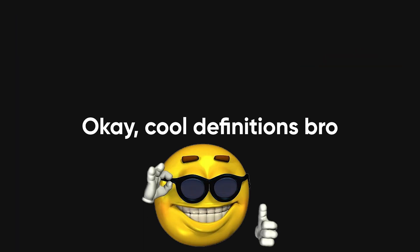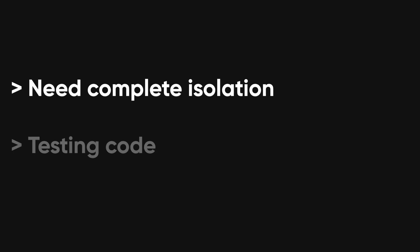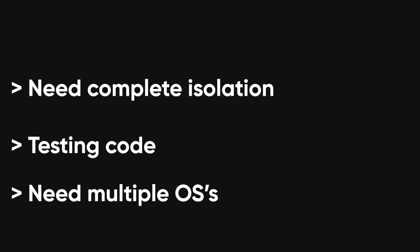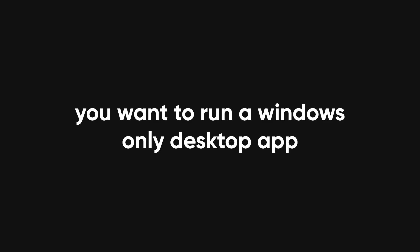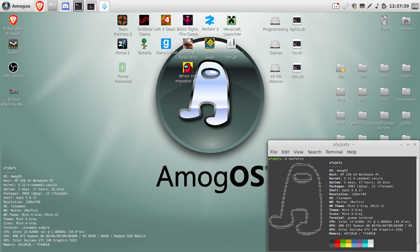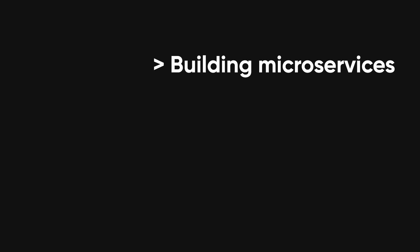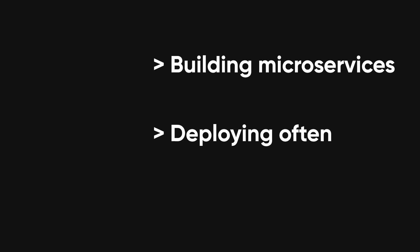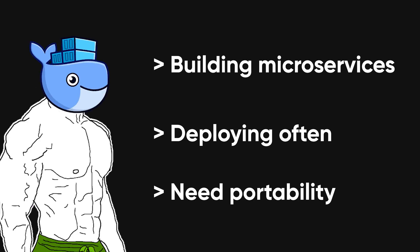When do you actually use each one? If you need complete isolation, are testing potentially unsafe code, or you're running apps that require multiple operating systems at the same time, virtualization is your go-to. Like if you want to run a Windows-only desktop app on a Linux server — that's VM territory. But if you're building microservices, deploying often, and need something portable across dev, staging, and production, Docker's the one.